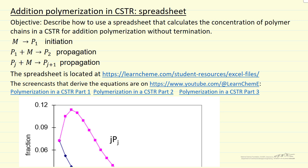I'll describe a spreadsheet that calculates the concentration of polymer chains for addition polymerization in a CSTR.